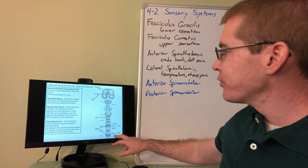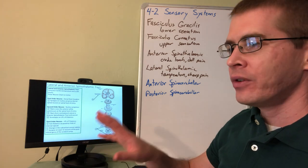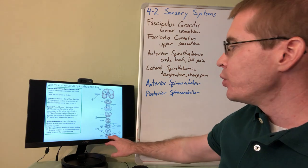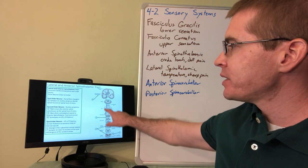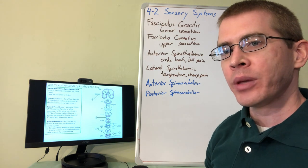And then that information is going to immediately cross at the level of entry, at the spinal cord level of entry within the anterior white commissure and then it will ascend in either that anterior or lateral spinothalamic tract.